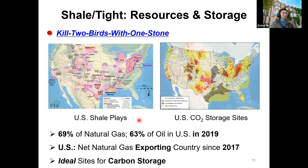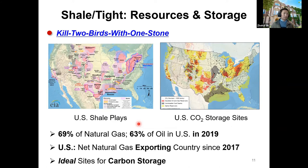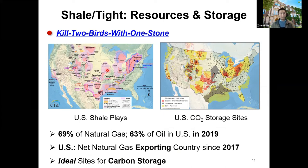Shale and tight reservoirs provide valuable energy resources and can also store carbon. The US became the number one natural gas and oil producing country because of the shale boom — 70% of US natural gas and more than 60% of oil is from shale. Since 2017, the US has been a natural gas exporting country. Importantly, shale gas plays overlap geographically with CO2 storage sites, meaning shale and tight reservoirs can both produce energy and store carbon — a two-birds-with-one-stone opportunity.